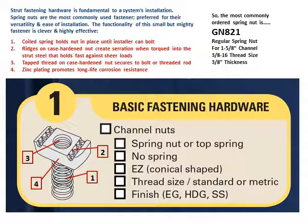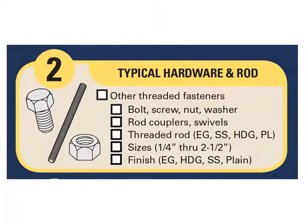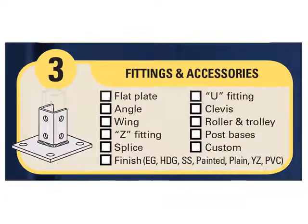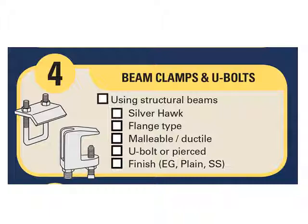The most commonly ordered spring nut is GN821 — regular spring nut for 1-5/8-inch channel, 3/8-inch thread size, 3/8-inch thickness. Number two: typical hardware and rod. In addition to custom strut fasteners, common threaded fasteners such as nuts, bolts, couplers, and threaded rods are fundamental to a typical strut installation. Number three: fittings and accessories. Strut flat and angle plates, post bases, wing fittings, and connector plates are key components that efficiently tie strut channel into a system.